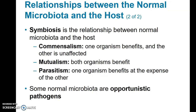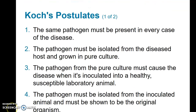Some normal microbiota are called opportunistic pathogens, meaning that if they end up in a place in the body they're not supposed to be, they could become harmful and cause disease. Or even if they're in the correct system, if there's some imbalance allowing that species to become more abundant than normal, such as Candida albicans, which can cause yeast infections, oral thrush, or other diseases.